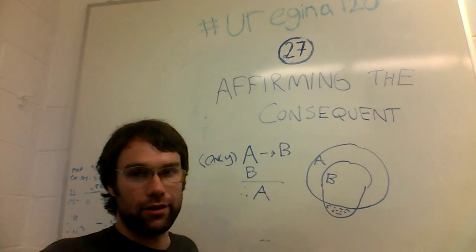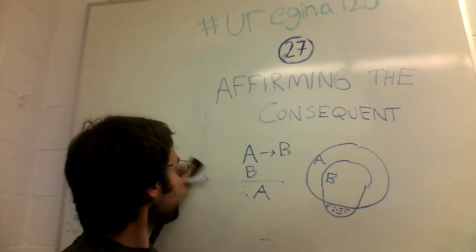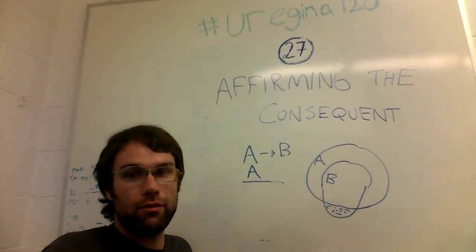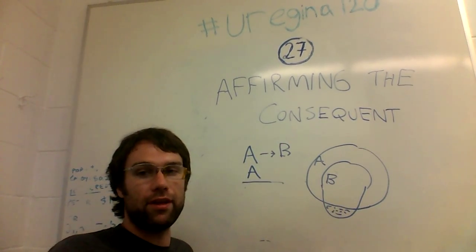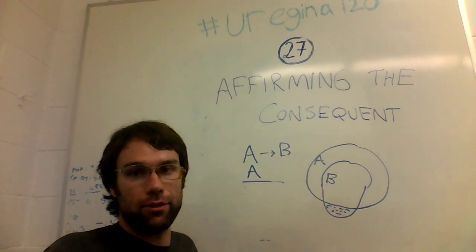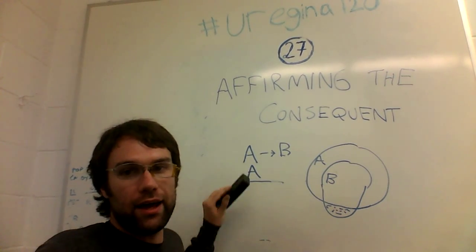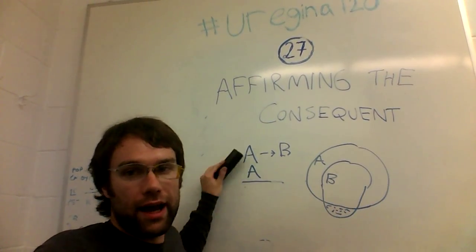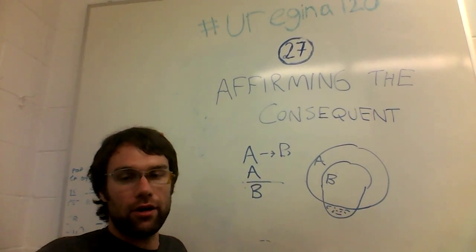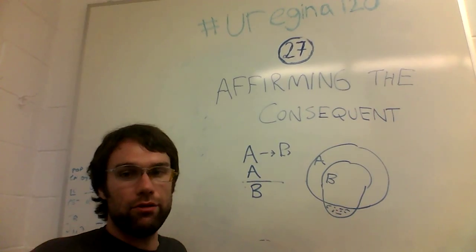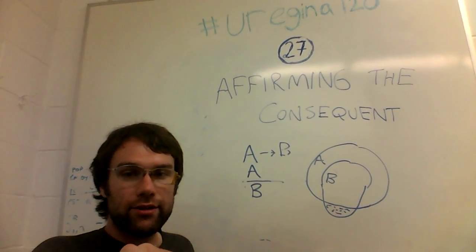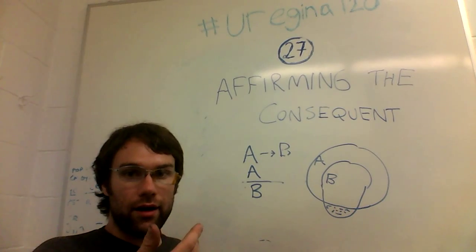The second is to change the second premise from B, the consequent or the thing that's being caused, to the antecedent, or the thing that's the if part of that first premise. If you change this second premise to A, then the two premises you have are A then B, A, which means that you have then B. This is a valid argument. This is a valid way of deducing B. If you have the argument, if it is raining then I am wet, and it is raining, then logically I am wet. Right?